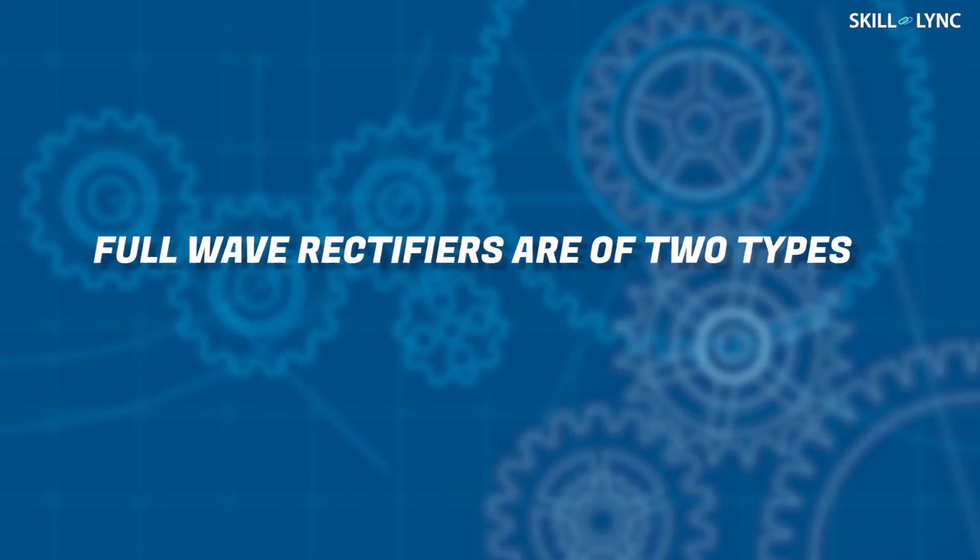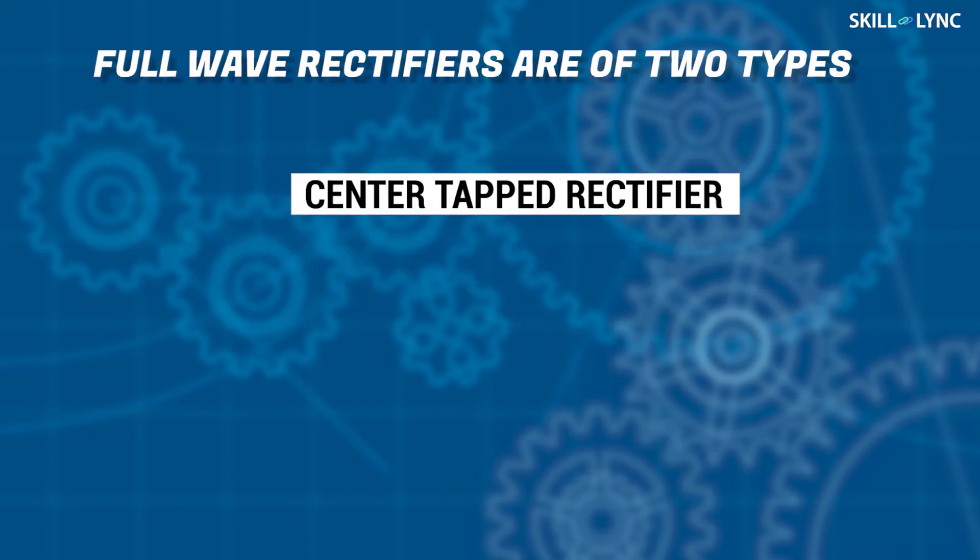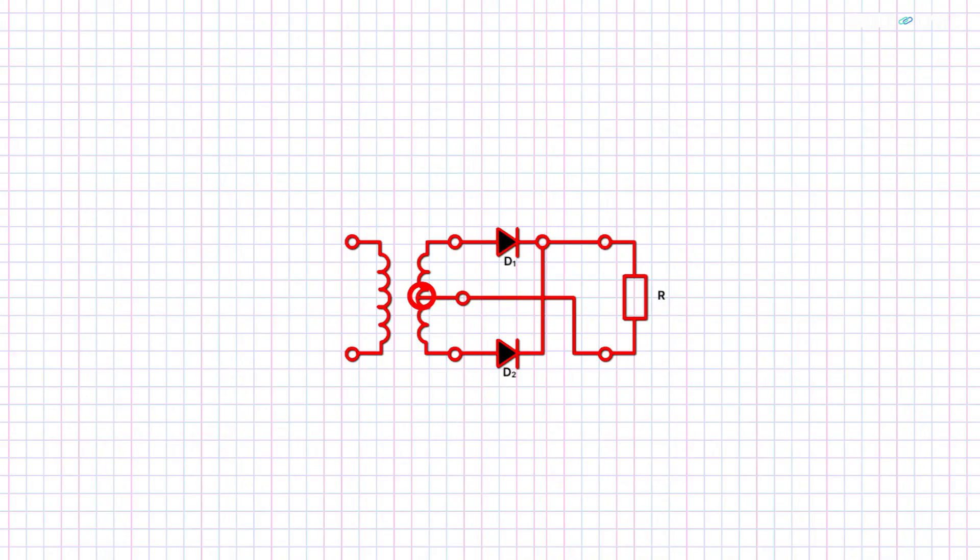The full-wave rectifier is of two types: center-tapped rectifier and bridge rectifier. In a center-tapped rectifier, the load is connected at the center of the transformer, which is considered the ground point or the zero-voltage point of the transformer. Two diodes are connected at either end of the transformer. Let's name the two points A and B.